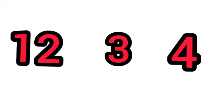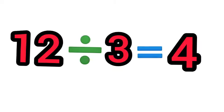We made 4 groups. How many groups did we make? Four groups. 12 divided by 3 is equal to 4.